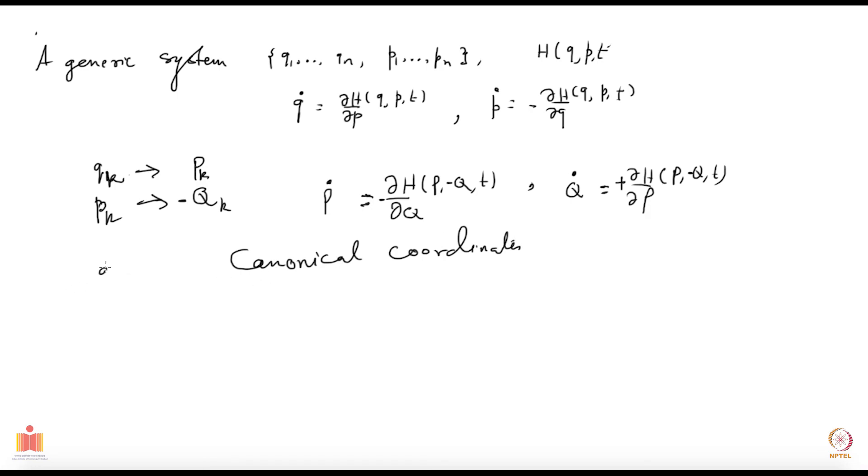Instead of saying these are coordinates and those are momenta, you say canonical coordinates. The Q's and P's henceforth I will be mostly referring to them as the canonical coordinates. We will talk more about canonical transformations in the next video.